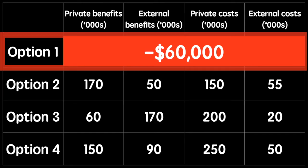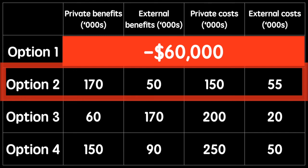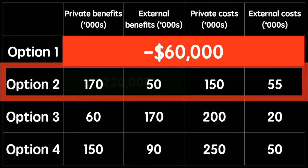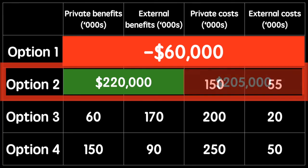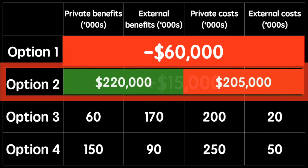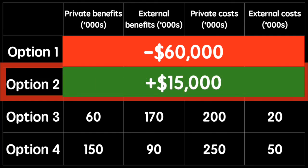Let's use the same approach to solve for the rest of the options and see if we can find one with a positive net benefit. Moving on to option two, we can see that the sum of the benefits is $220,000 and the costs are $205,000. The net benefit is therefore $15,000.